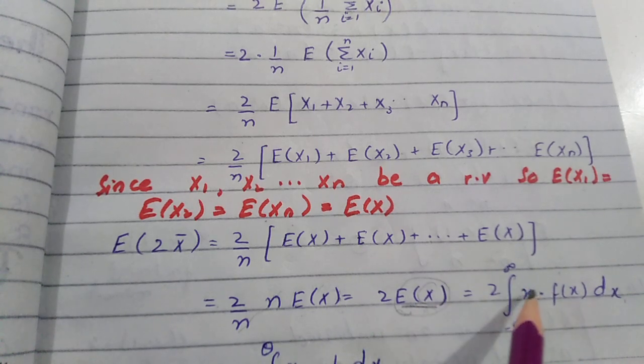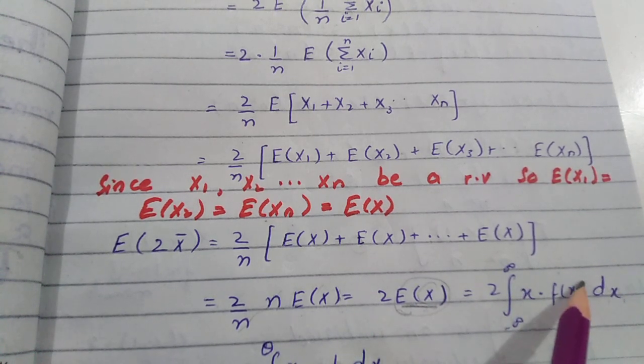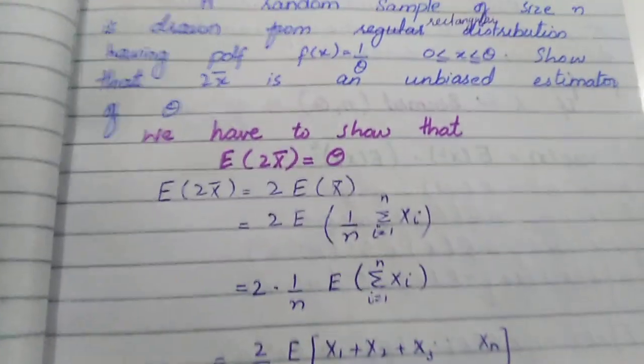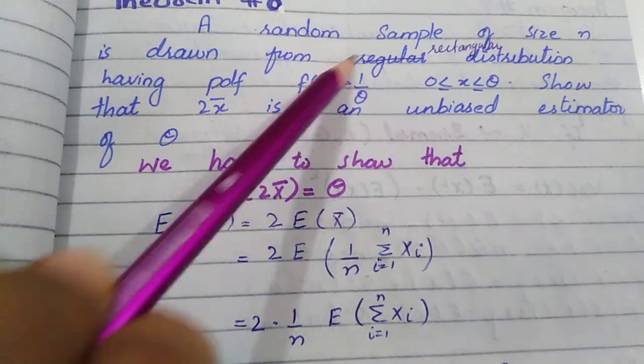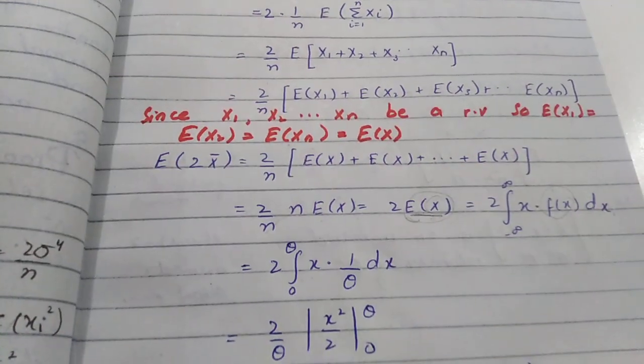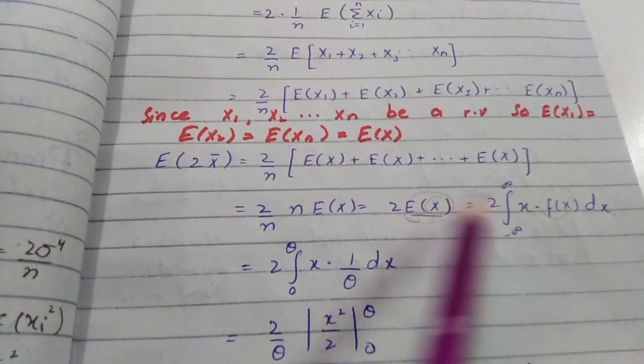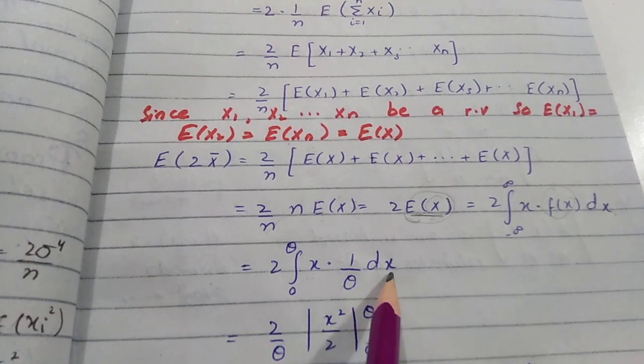Now, the pdf was given to us in the question. It is equal to 1 by θ. Now, we will substitute it here. We have 2 times integral of x times 1/θ dx.